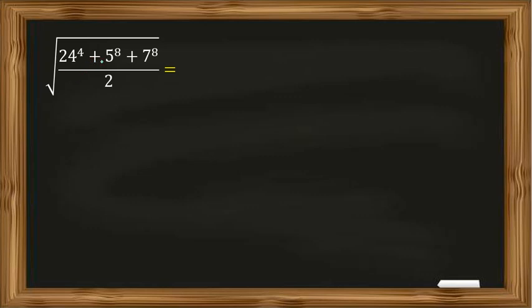Square root of 24 to the 4 plus 5 to the 8 plus 7 to the 8, all over 2. Okay, do we consider the numerator a? So it will be square root of a over 2.